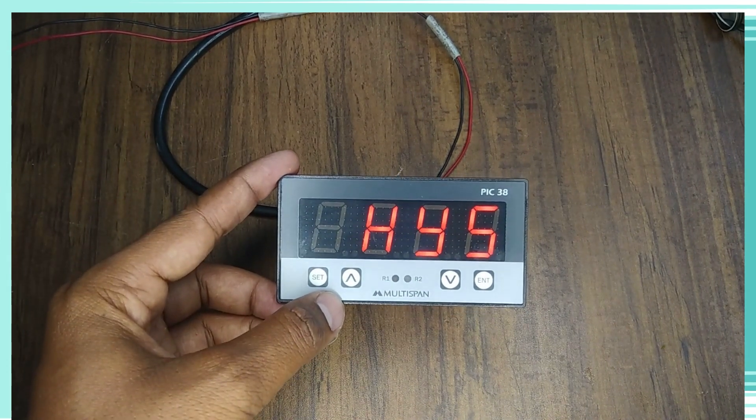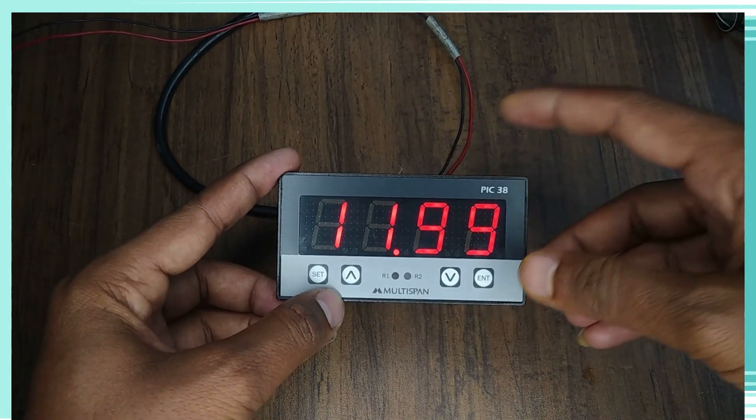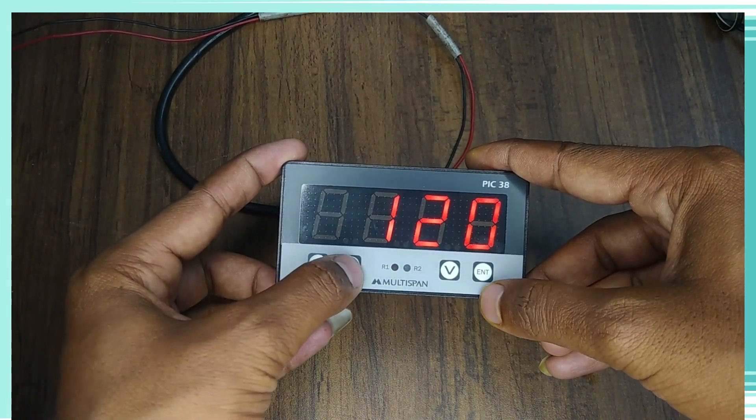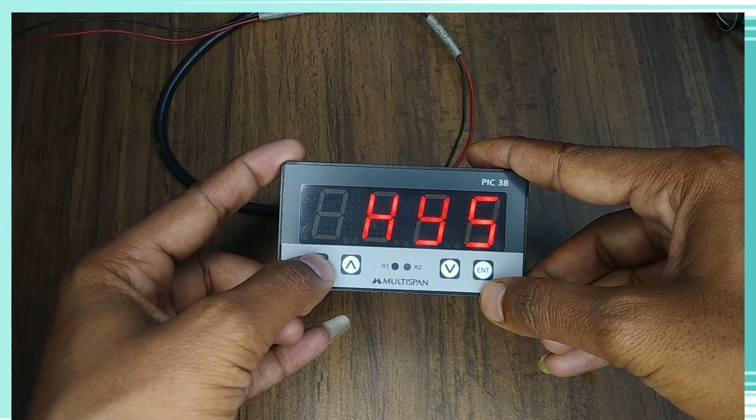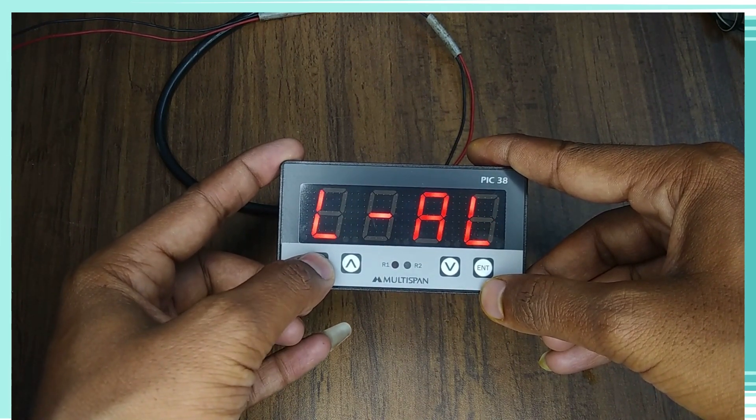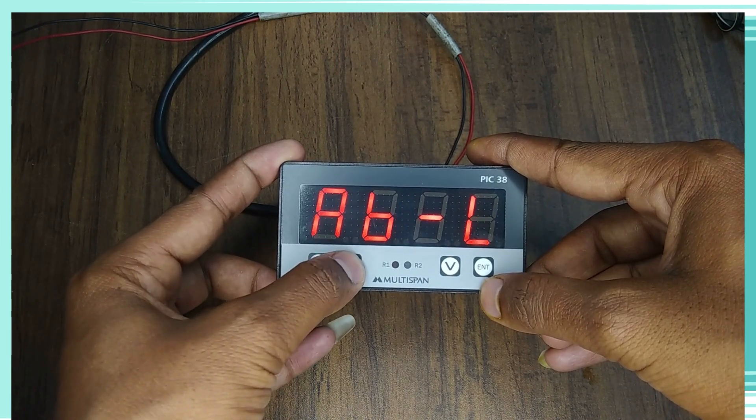After that, we can see the hysteresis in that we have range 1 to 1000. After that, we can see the mode. In the mode, there is high alarm, low alarm, and other settings.